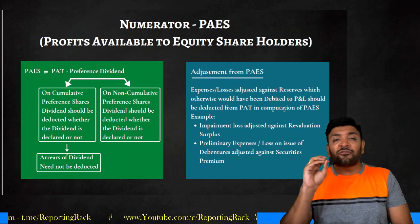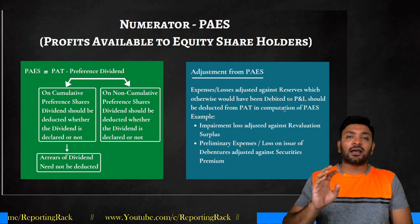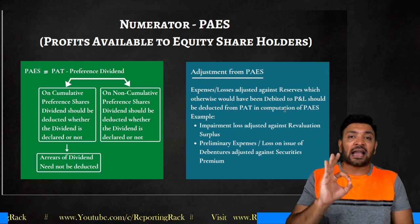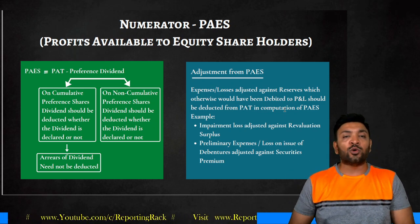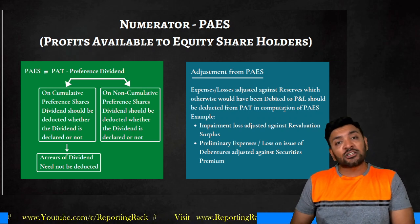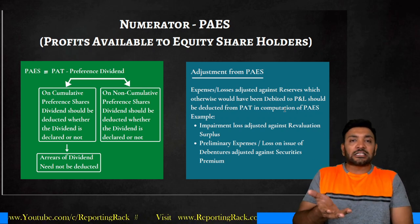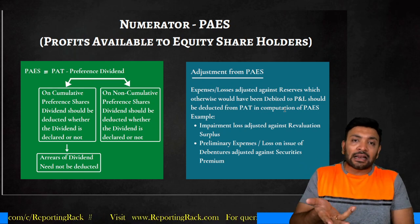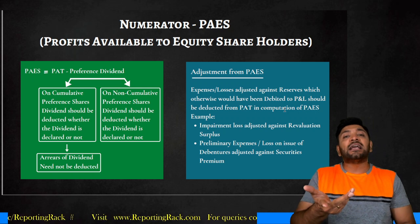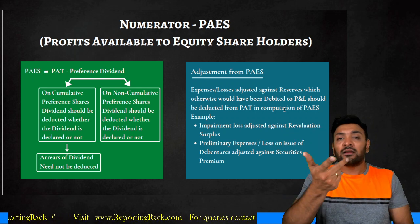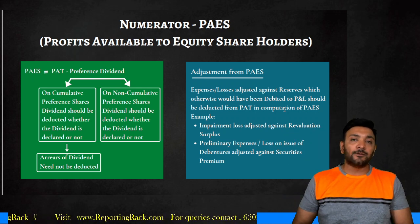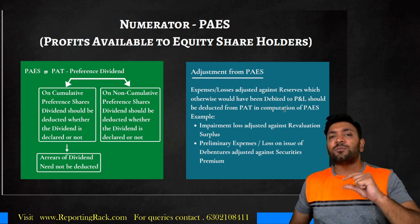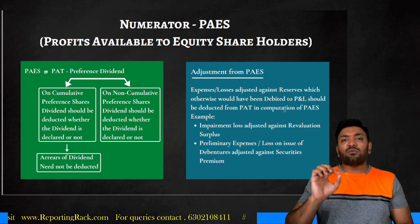For non-cumulative preference shares, it is not necessary to deduct preference dividend from profit after tax to arrive at PAS unless the dividend has been declared. The reason: if there are insufficient profits, non-cumulative preference dividend need not be declared or paid, and there is no obligation for the enterprise to pay it in future years when they make sufficient profits.